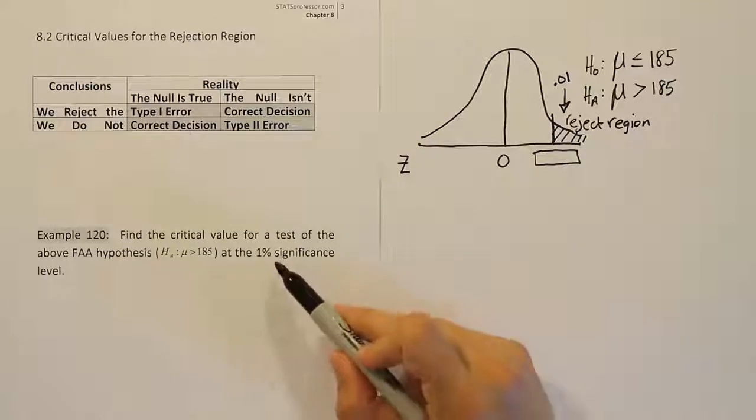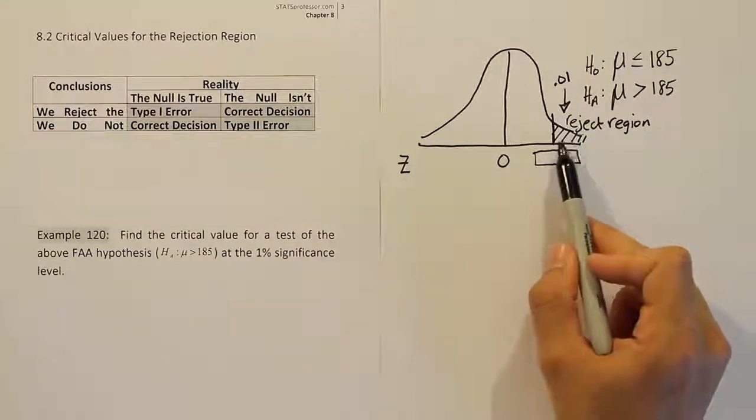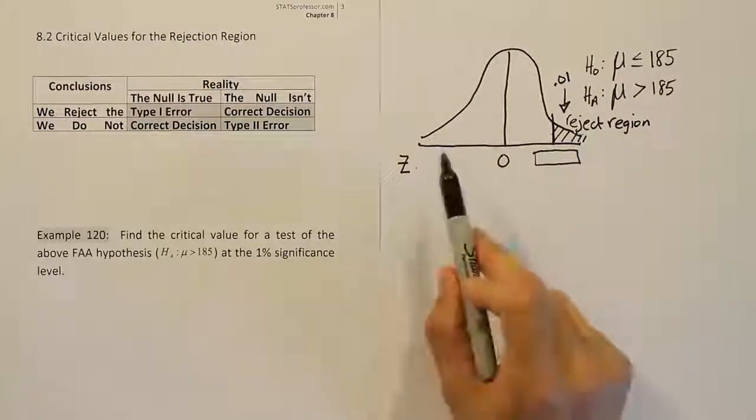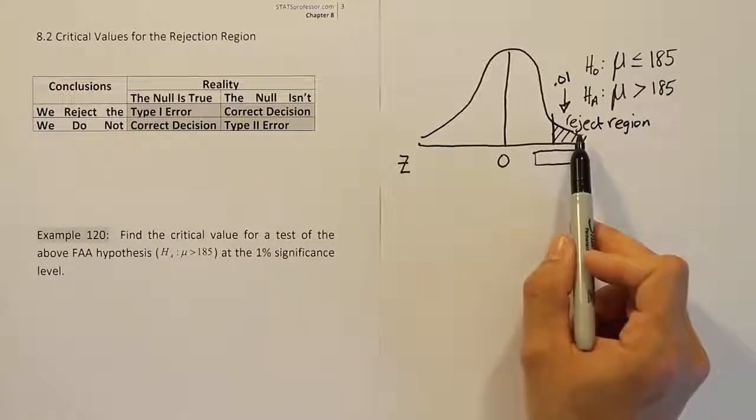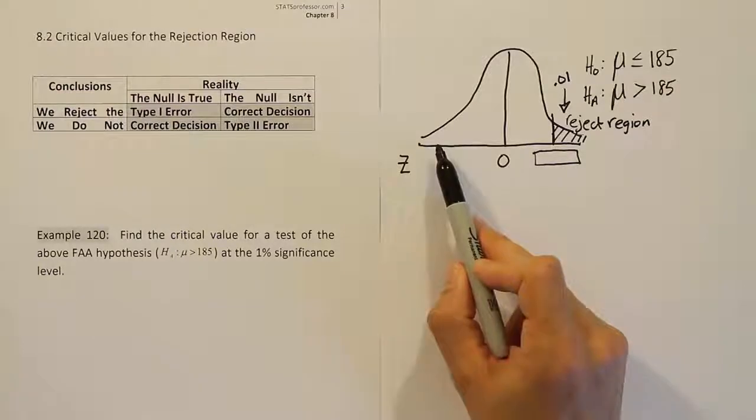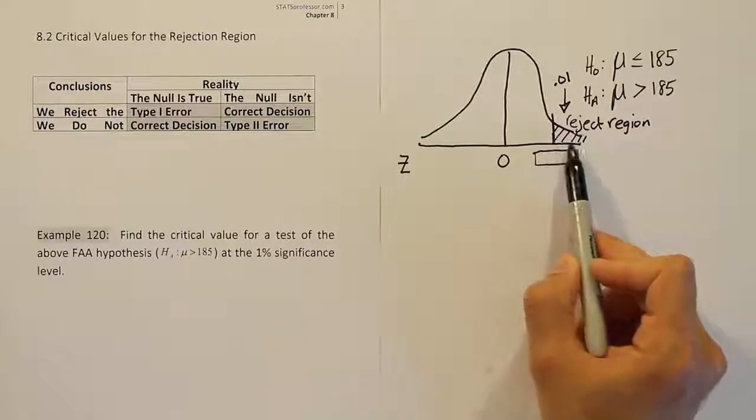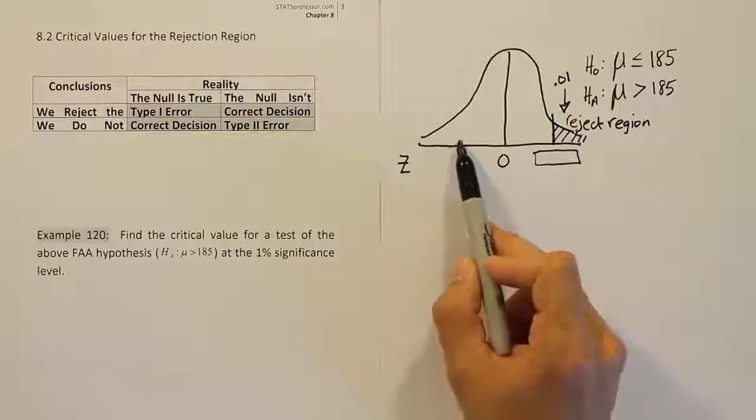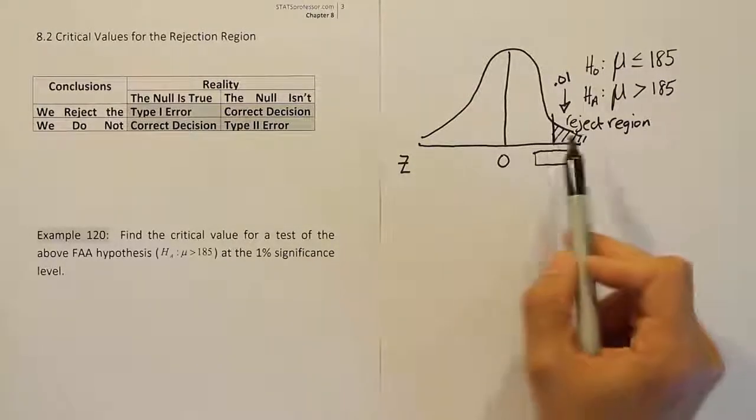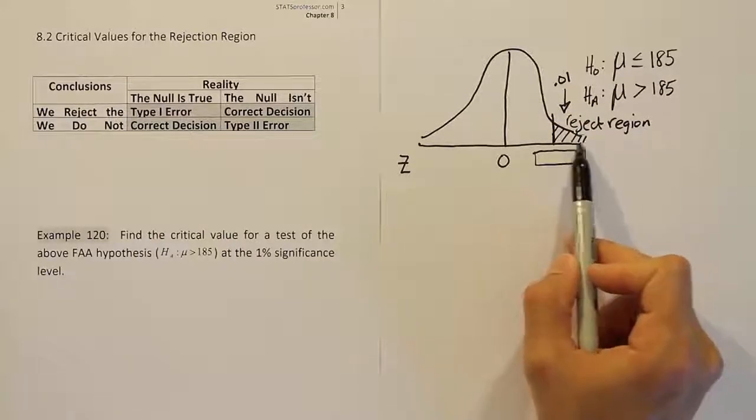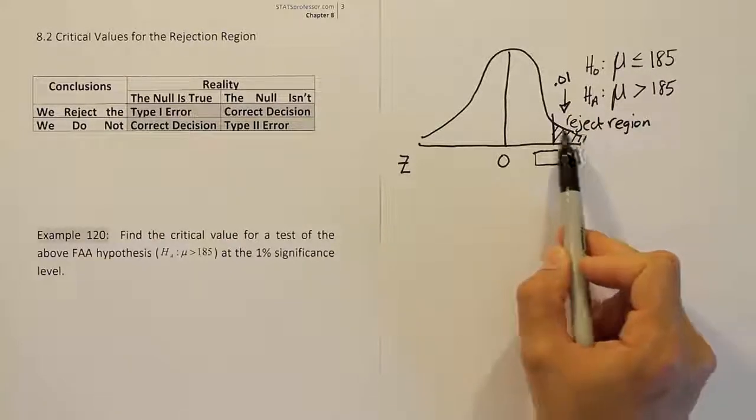So whatever your significance level is, you know that's going to be the area in your tail or tails. If there are two tails, you will split the 1% into two different tails, so you'll have half of 1% and half of 1%. If it's just a one tail test like this one, all of that significance level goes into one tail. If it was on the left, all of it would be on the left-hand side. If it's on the right like it is here, all of the alpha goes into this one tail.